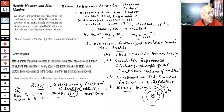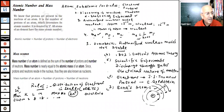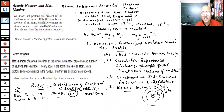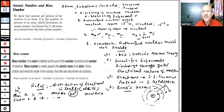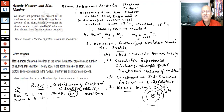Certain atoms have a tendency not to combine — these are the noble gases, or earlier called inert gas elements. They include helium, neon, argon, and others. Helium is used in balloons; neon is used in advertisement lights giving beautiful colors; argon is also present in the air in small amounts and used in fluorescent tubes. These are called noble gases.